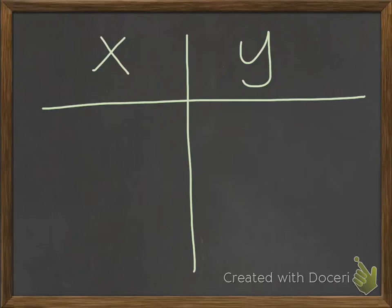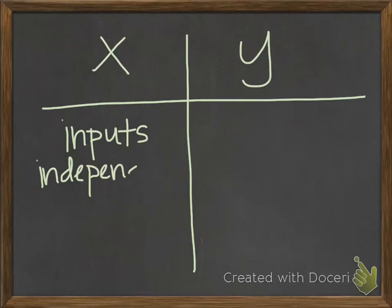So remember the inputs, those are your x values. These also represent the independent variable in this situation. And then we're starting to get used to this idea of domain. Domain is all of the different x values together.